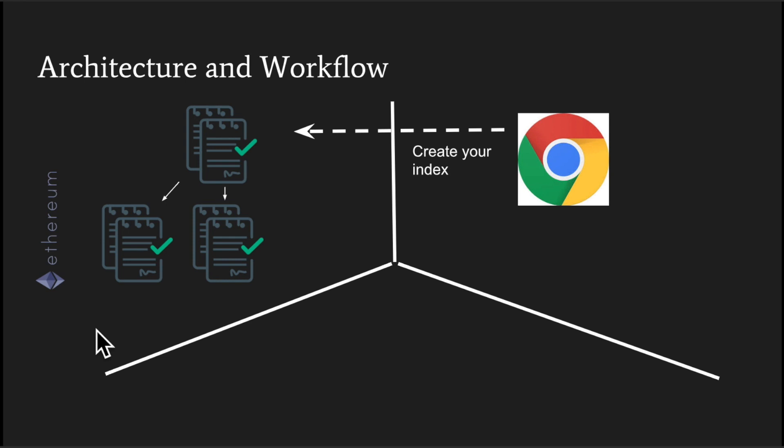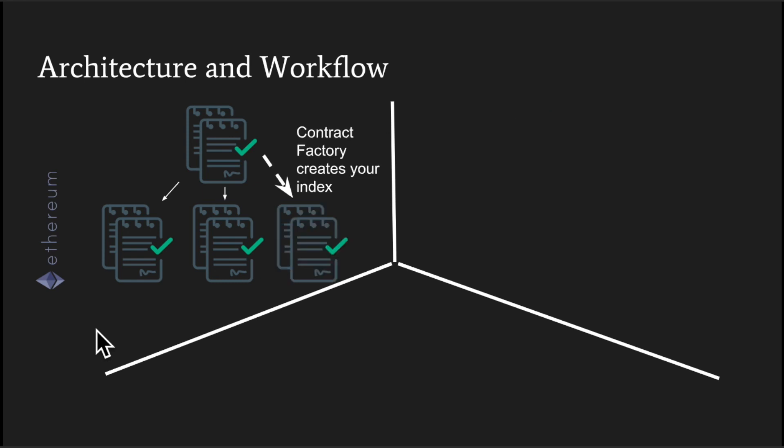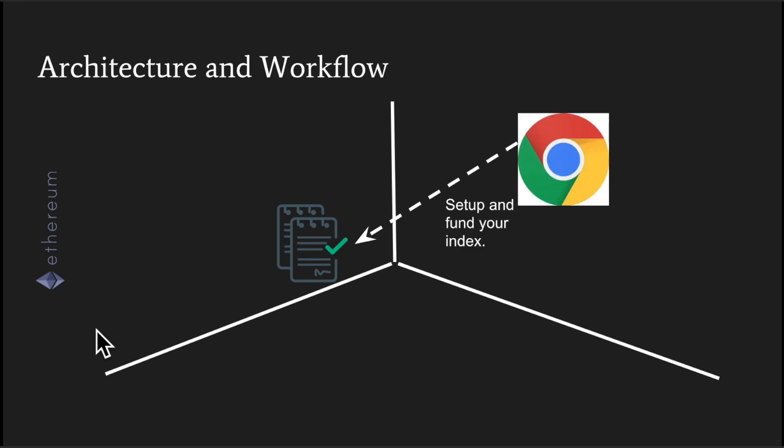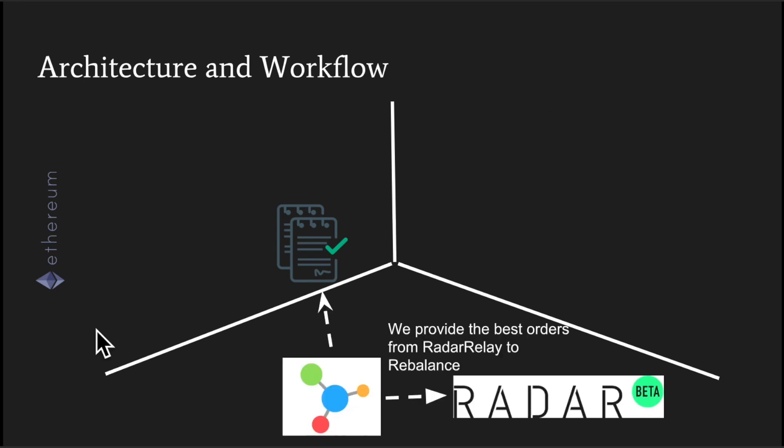Quickly going over the architecture: from a Chrome browser, you create your own index by calling a contract factory, which creates a smart contract for you. At this point in time, you set permissions for the contract and fund it. Thereafter — this is the point of failure in the system — we as a service provide you with radar relay orders, so 0x orders, and we give the contract those orders at the time of rebalance.